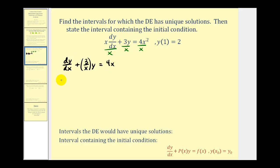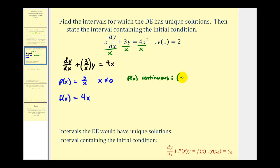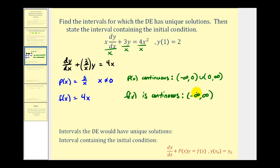Now we recognize that p(x) equals three divided by x, and f(x) equals four x. For p(x), x cannot equal zero because we'd have division by zero, so p(x) is continuous on the interval from negative infinity to zero, or from zero to infinity. f(x) is continuous for all real values, so f(x) is continuous from negative infinity to positive infinity. The intersection of these two intervals is just the interval where p(x) is continuous — meaning the original differential equation has unique solutions for all values of x in those intervals.